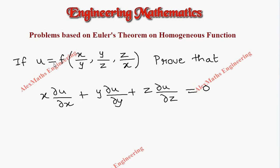The function u is given as f(x/y, y/z, z/x). Since it is in terms of x, y, and z, let's rewrite u as u(x, y, z),